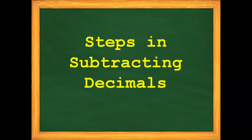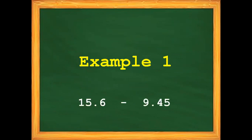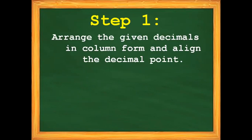Let us solve the problem. What are the steps in subtracting decimals? For our example number 1, we have 15 and 6 tenths minus 9 and 45 hundredths. Step number 1: arrange the given decimals in column form and align the decimal point.